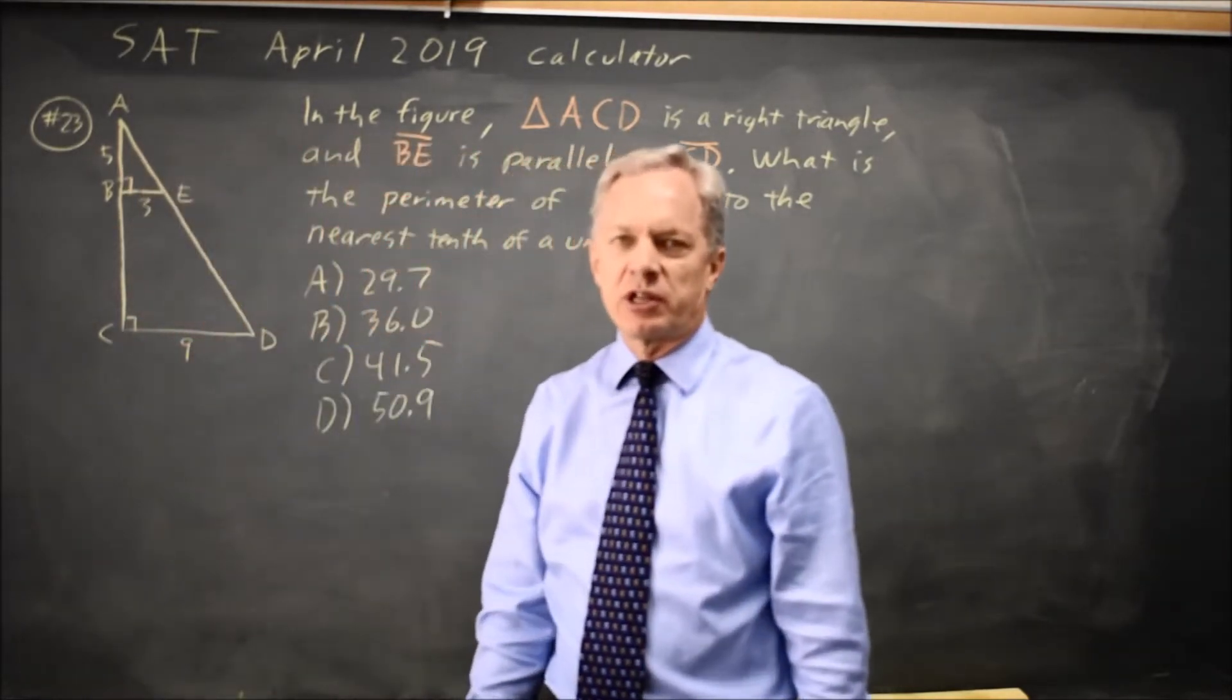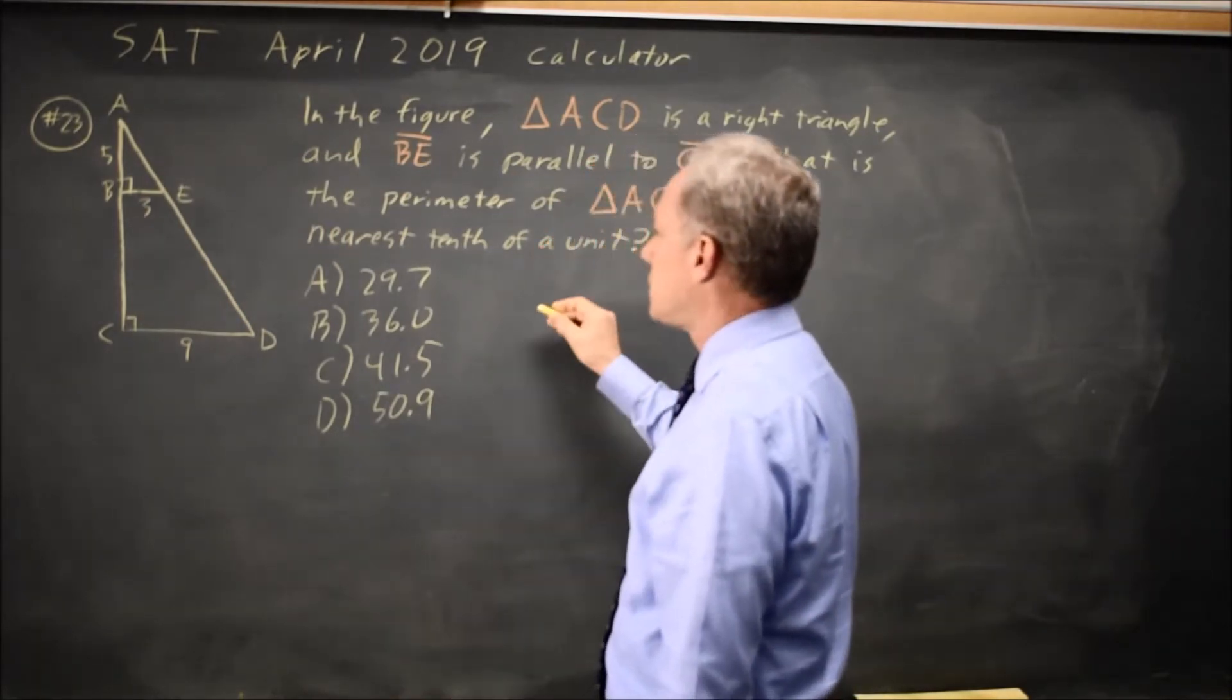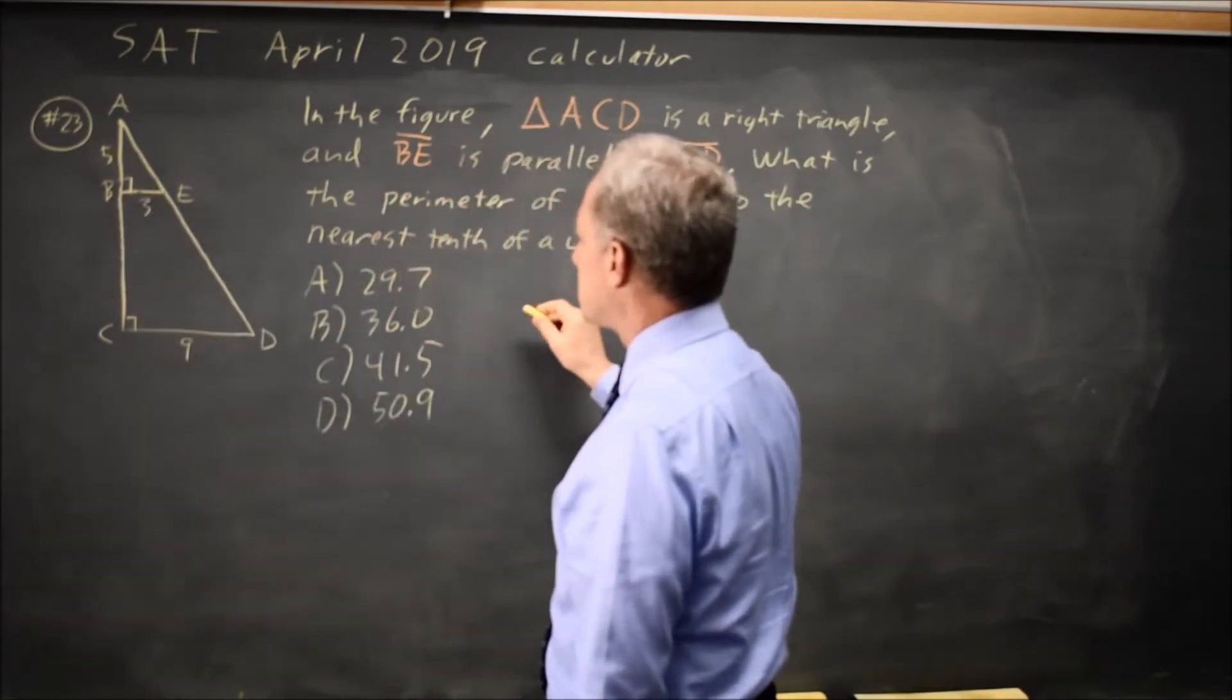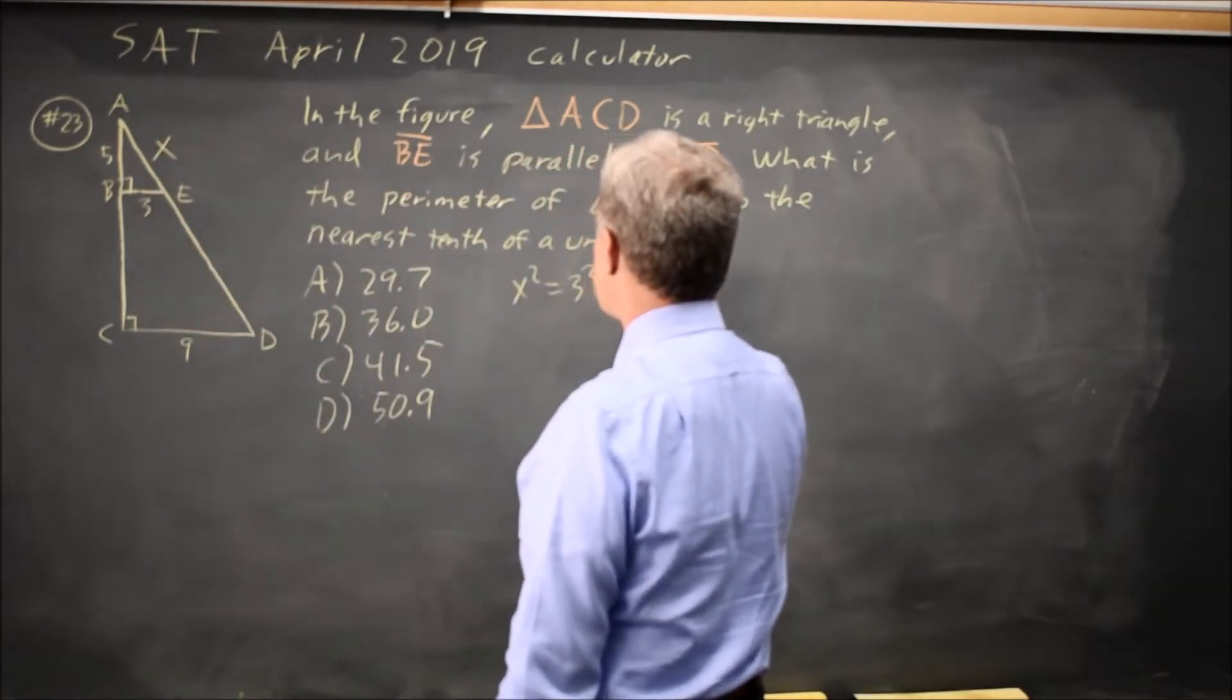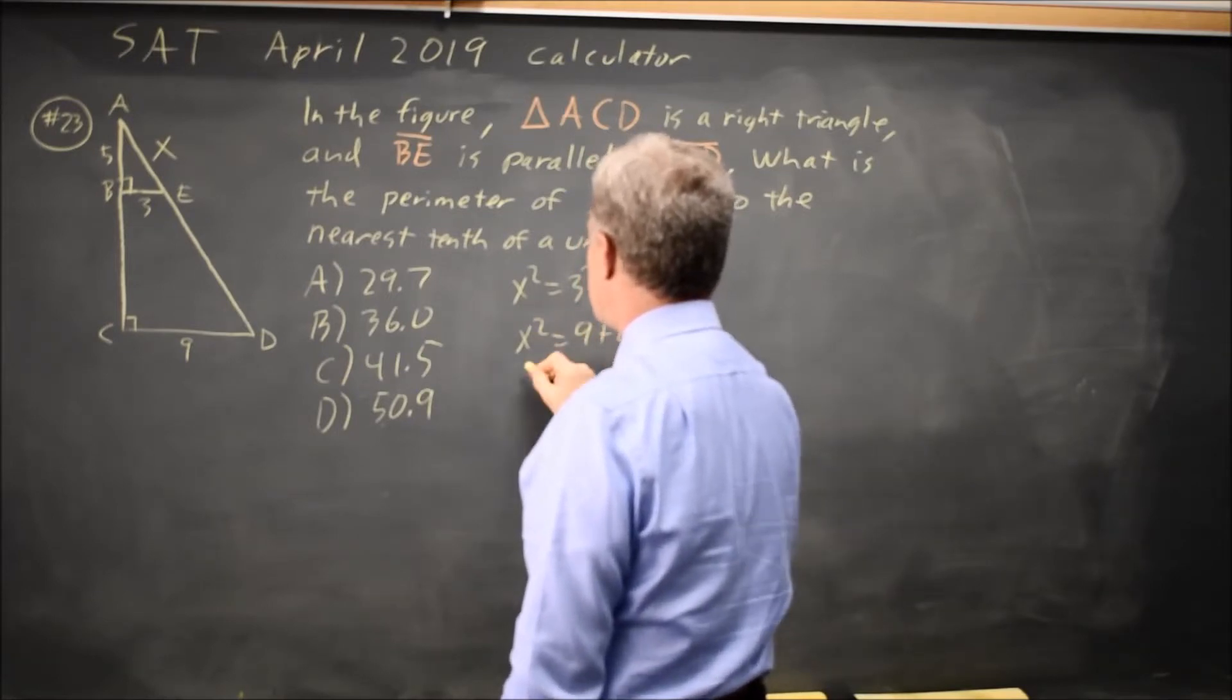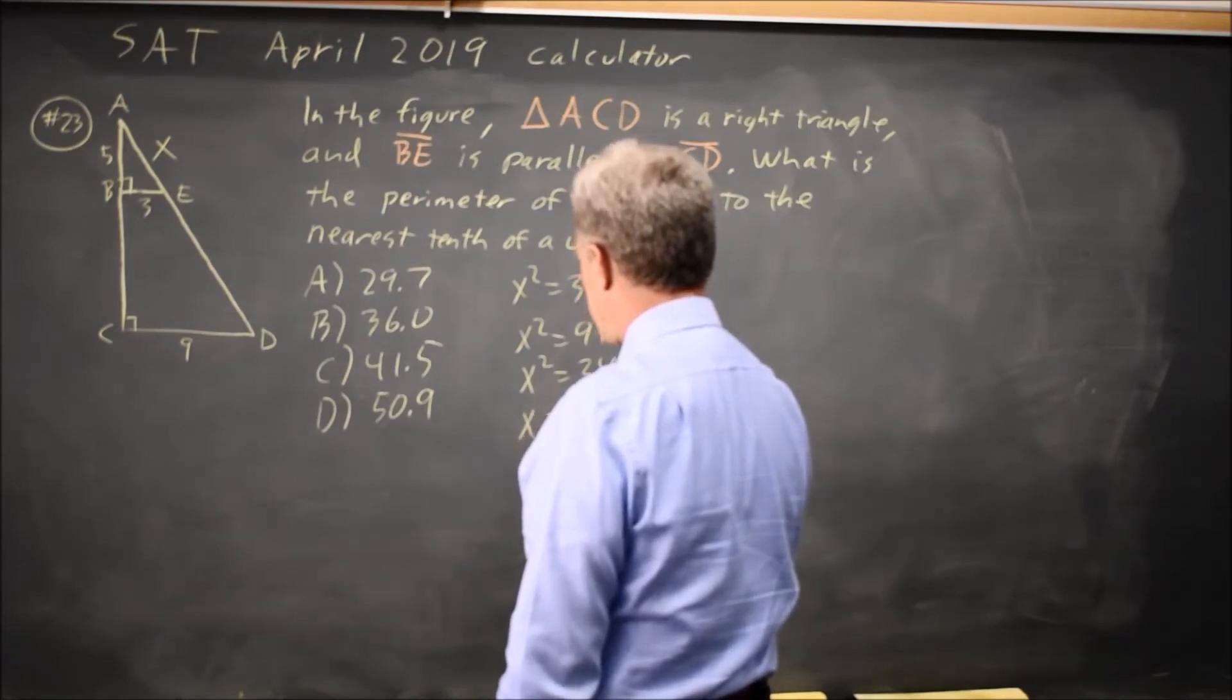With a 5 and a 3 in a right triangle, we're tempted to say that's a 3-4-5 triangle, but it's not because the 3 and the 5 are the two legs and the hypotenuse—let's call that X. X squared equals 3 squared plus 5 squared, so X squared equals 9 plus 25, X squared equals 34, so X equals square root of 34.